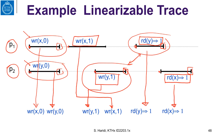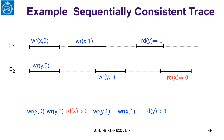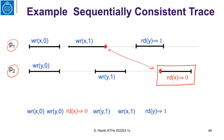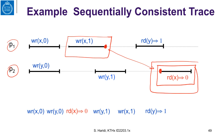This execution is also sequentially consistent because linearizable executions are also sequentially consistent. Now let us look at an execution which is sequentially consistent but not linearizable. We have the same two processes P1 and P2, but in this case the read of register X returns value 0. Because the invocation of this read is after the response of the write of X to 1, this execution is not linearizable. However, this execution is sequentially consistent.